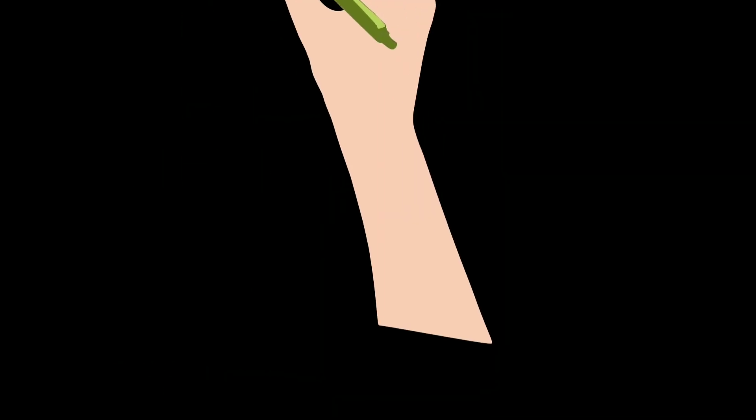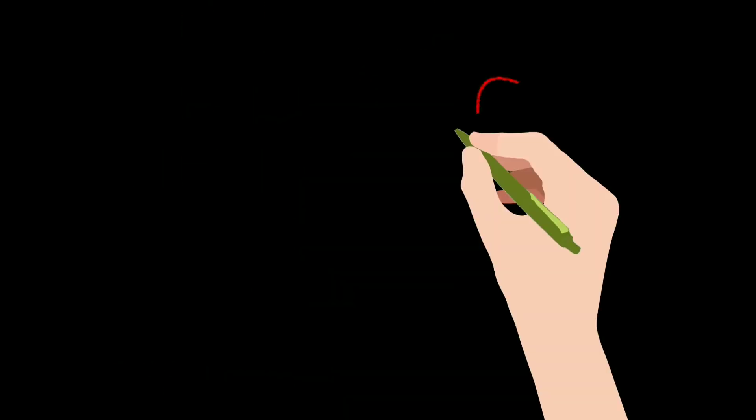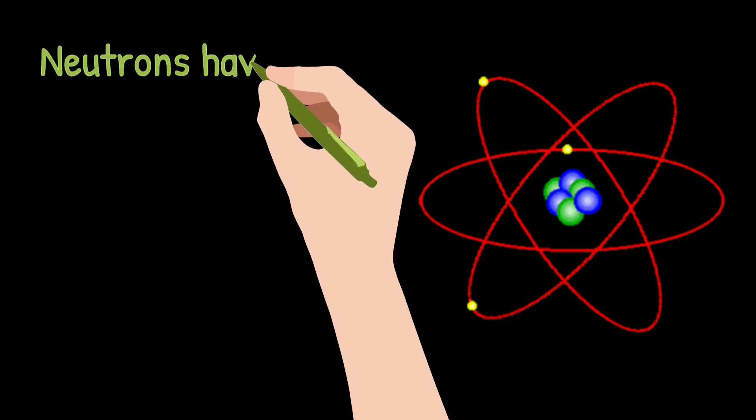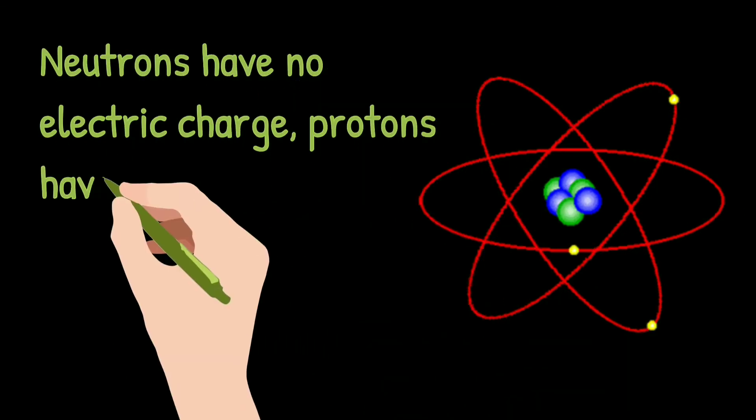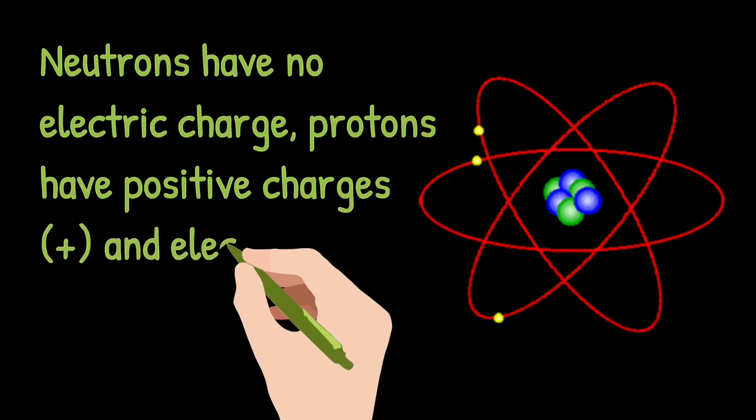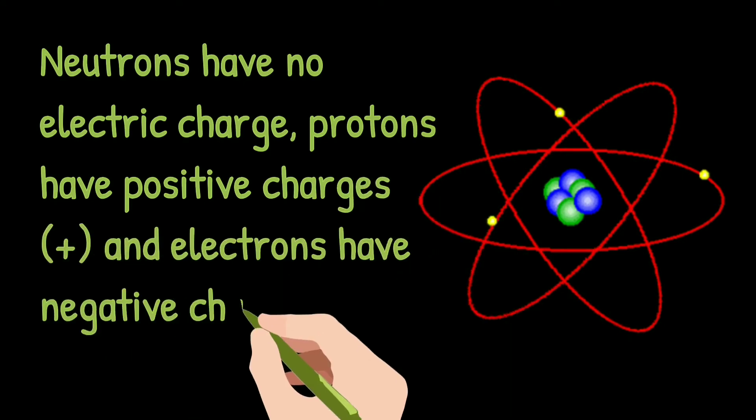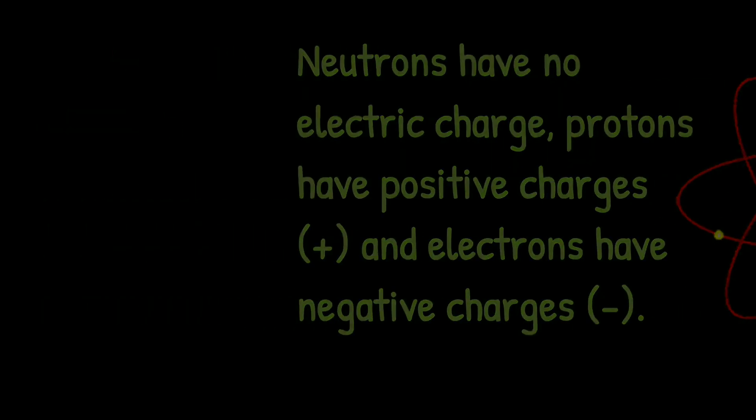We have learned about Bohr's atomic model in our lower classes. These subatomic particles possess charges. Neutrons have no electric charge, proton has positive charge, and electron has negative charge.